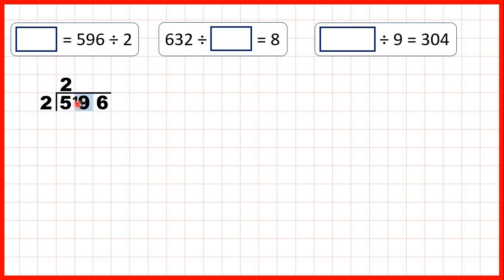Now, we have 19 divided by 2. That's 9 remainder 1, because 9 times 2 is 18, then we need one more to get to 19. So, now we have 16 divided by 2, which is 8, because 8 times 2 is 16. So, our answer is 298.